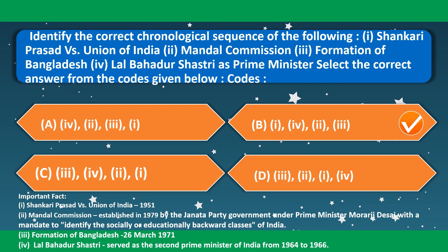Identify the correct chronological sequence: Sankari Prasad vs. Union of India; Lal Bahadur Shastri as Prime Minister; Formation of Bangladesh; Mandal Commission. The correct sequence is 1, 4, 2, 3 — option B is correct. Sankari Prasad vs. Union of India is the landmark decision of Indian judiciary in 1951. Mandal Commission was established in 1979. Formation of Bangladesh took place on 26th March 1971. Lal Bahadur Shastri served as second Prime Minister from 1964 to 1966.